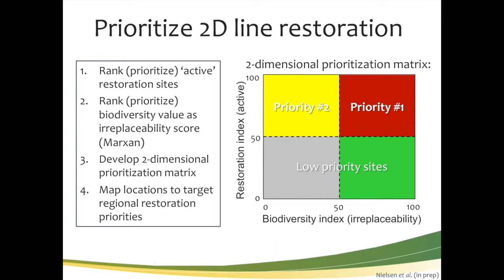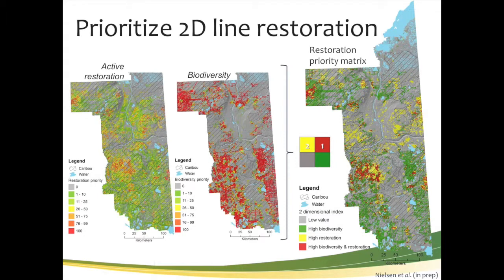By combining an irreplaceability biodiversity index with a restoration index in a simple priority matrix — restoration versus biodiversity — we can prioritize places that have both high biodiversity and high restoration value. Taking the active restoration values in red and biodiversity values in red, we combine those to produce a restoration priority matrix. Areas in red represent high biodiversity and high active restoration value, such as up in the Muskeg River area and other scattered areas throughout. Other areas have high restoration value but lower biodiversity value relative to the 62 indicators chosen.